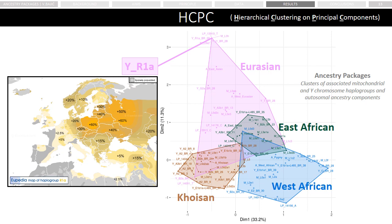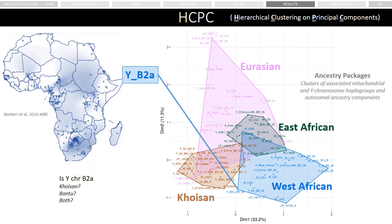In order to check if such clustering made sense, we verified whether the assignment of uniparental lineages into certain clusters was supported by previous literature. As an example, the Y chromosome haplogroup R1a, which was associated with the Eurasian cluster in our analysis, is indeed found at highest frequency in Europe. To our surprise, we found that many more associations were in good agreement with previous literature. We did not find only confirmatory cases, but also novel associations. For example, previously the Y chromosome haplogroup B2a could not be clearly associated with Bantu or Khoisan groups, but in our analysis we could finally associate it with the Bantu expansion, which brought the West African component to Southern Africa.